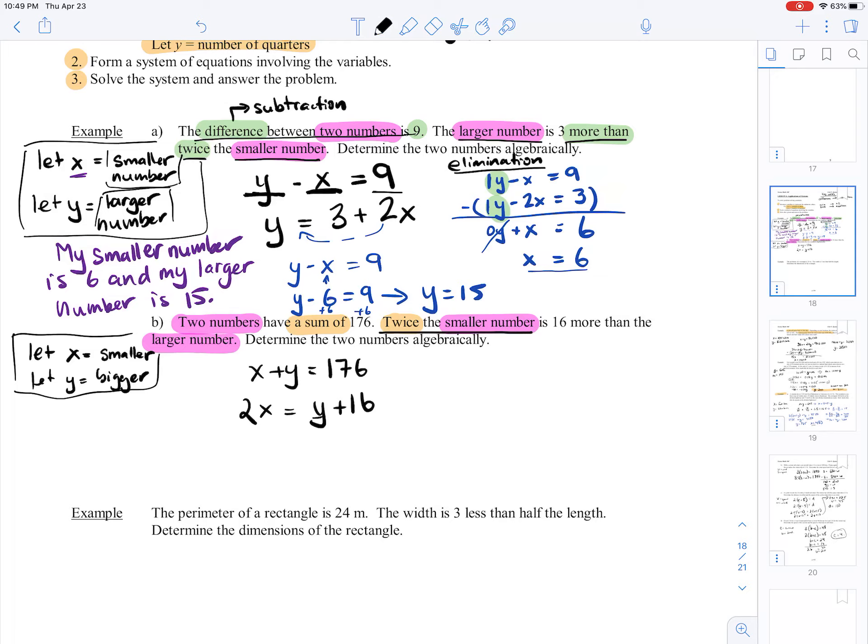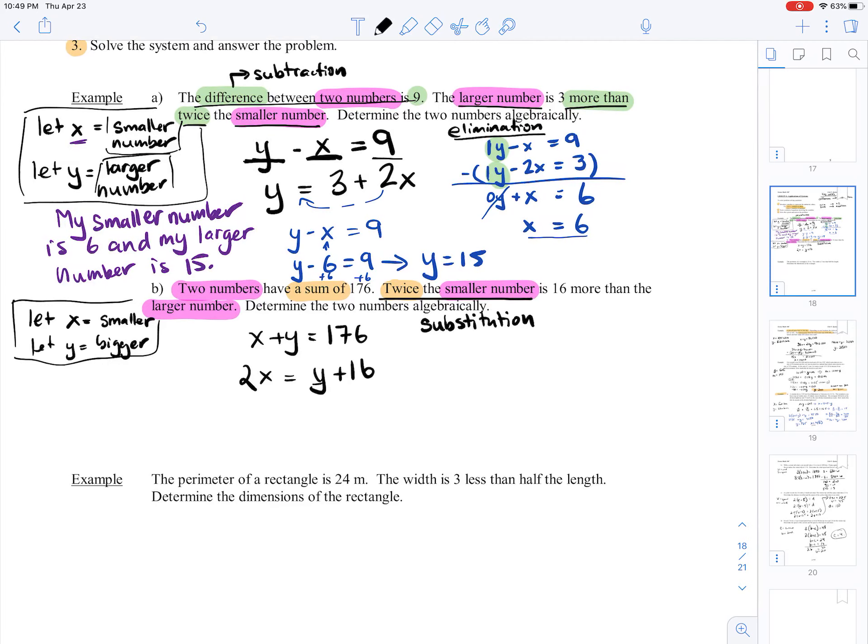Now we've got our two equations here, so all we have to do is solve them. The last time I used the elimination method, so this time I'm going to do the substitution method. And to do the substitution method, I need to get one of my variables by itself.